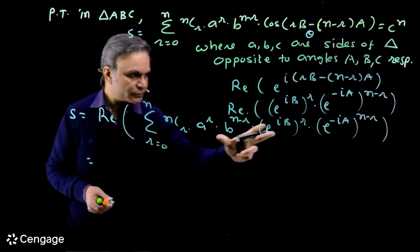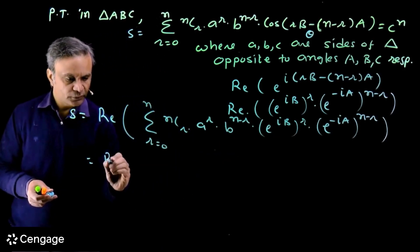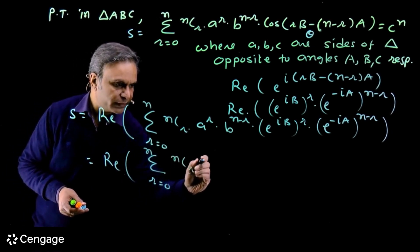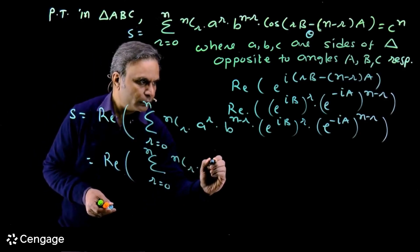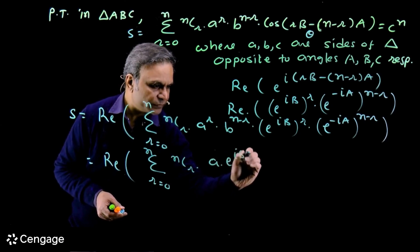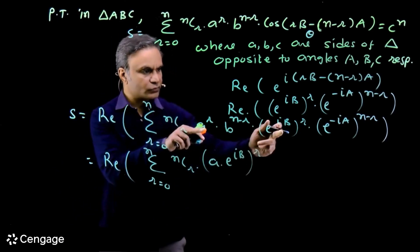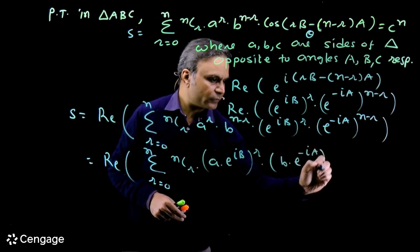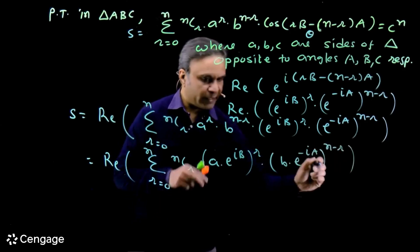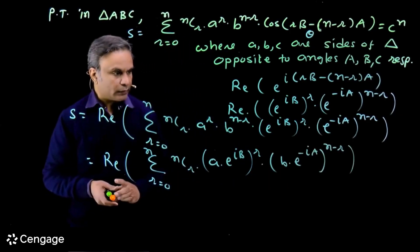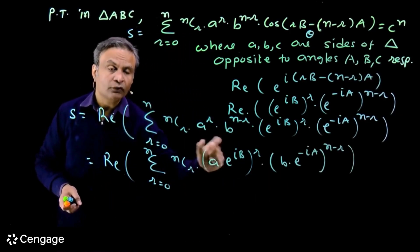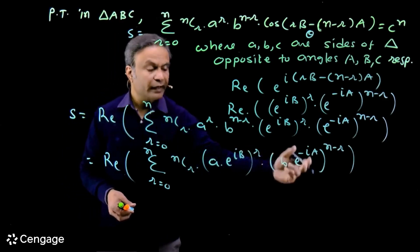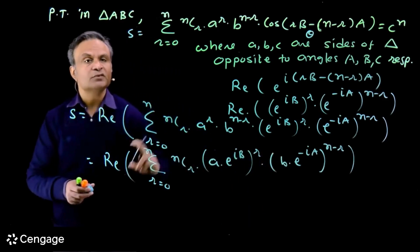We simplify the general term to use binomial expansion. We write it as nCr · (a · e^(iB))^r · (b · e^(−iA))^(n−r), clubbing the respective factors. This is a standard binomial general term nCr · x^r · y^(n−r), so the sum equals (a · e^(iB) + b · e^(−iA))^n. We now need to simplify this complex number.